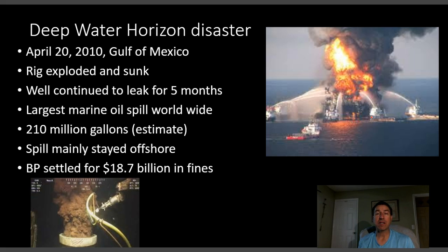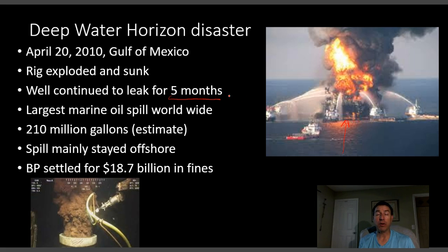The other disaster to discuss is the Deepwater Horizon, which happened in the Gulf of Mexico in 2010. This large offshore oil rig was drilling in some of the deepest water used for oil production when it exploded. There was a problem with the blowout preventer — it failed to stop a surge of natural gas from going up the well, and the natural gas exploded at the top. The well caught fire, eventually sank, and the wellhead at the ocean floor broke off, leaking crude oil for five months. This was the largest marine oil spill worldwide at over 210 million gallons — and that estimate is probably low.